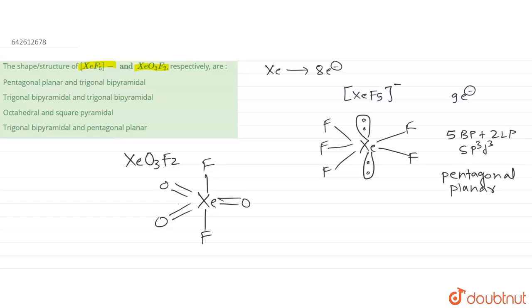So hybridization will be what? How many sigma bond pairs are there? There are total five sigma bond pairs. So there are total five sigma bond pairs. Here we are talking about sigma bond pairs plus lone pairs is zero.